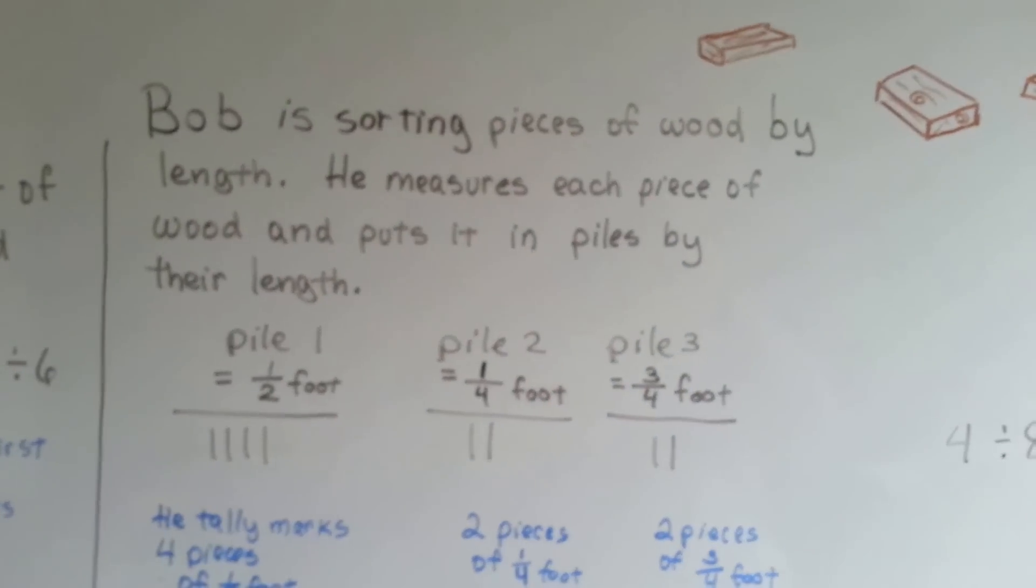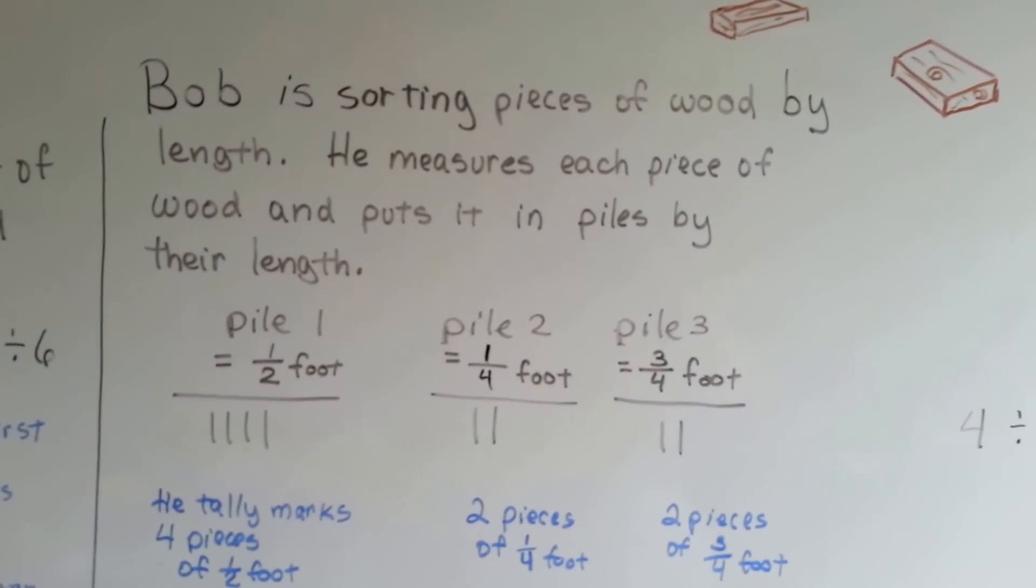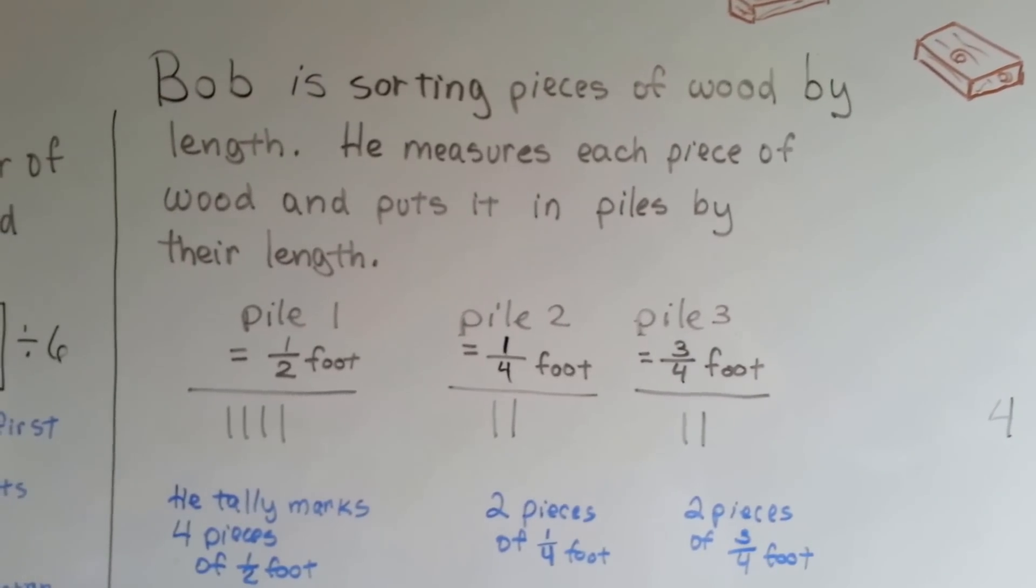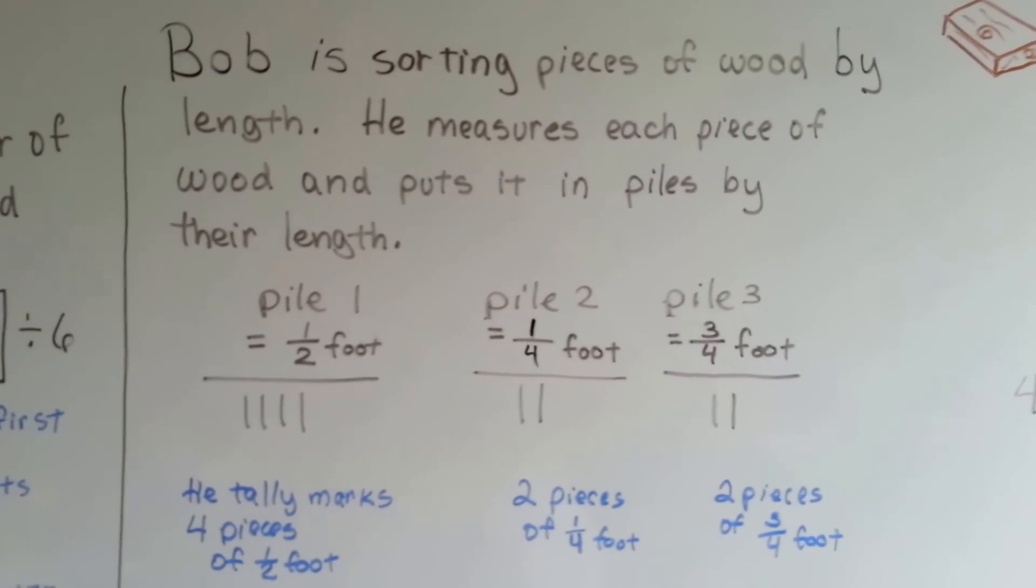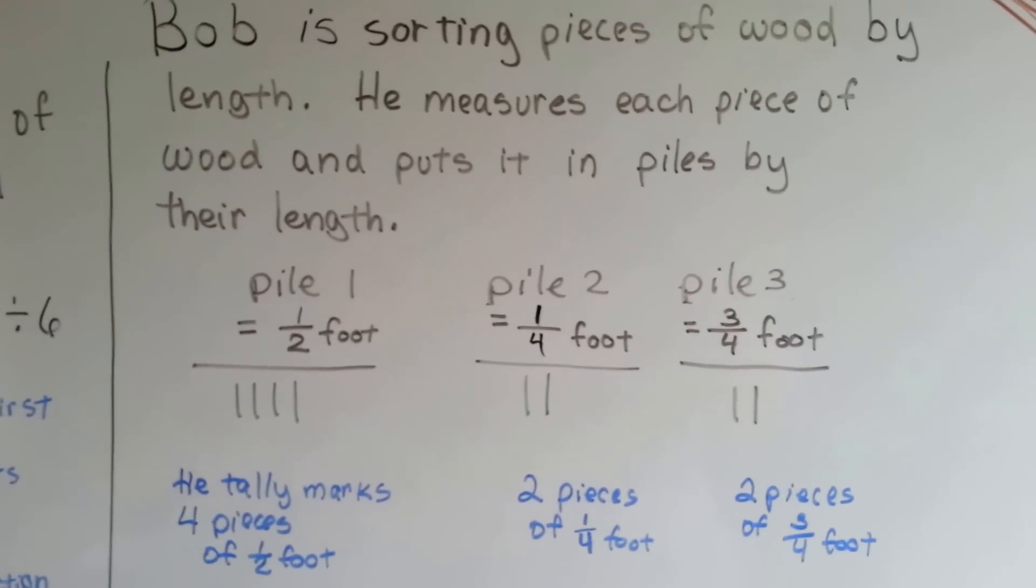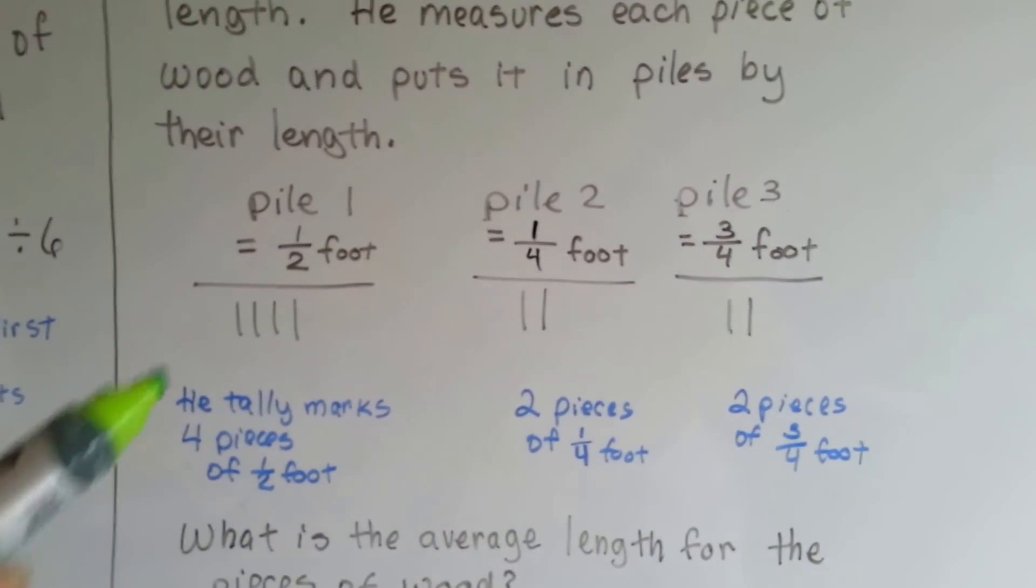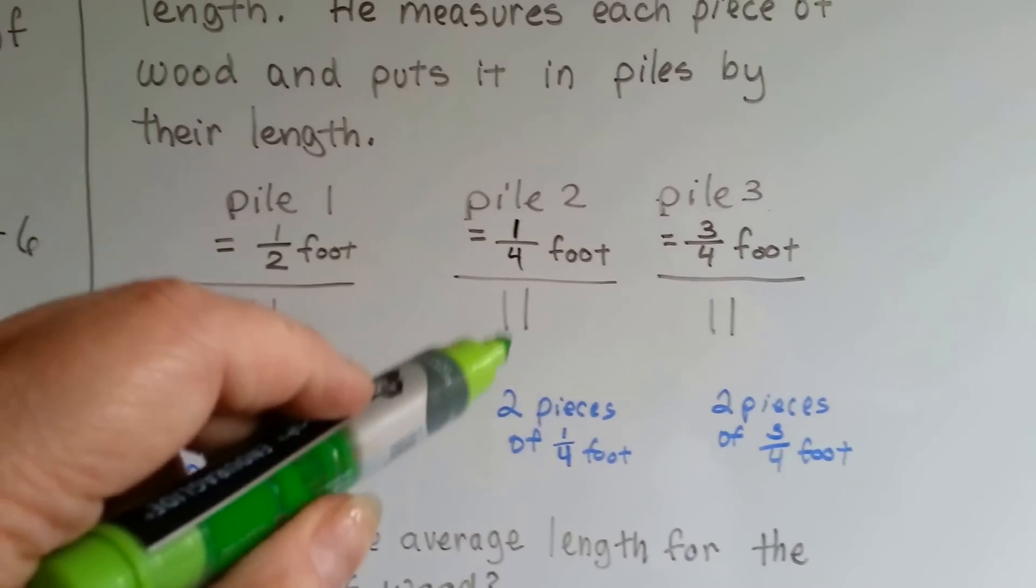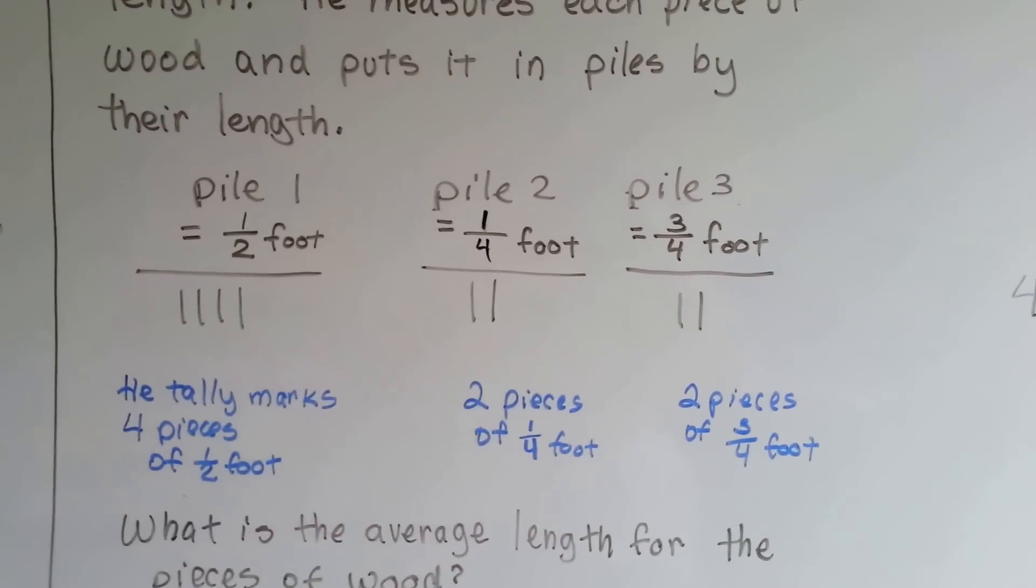Bob is sorting pieces of wood by length. He measures each piece of wood and puts it in piles by their length. So, pile one has half-foot lengths, pile two has one-fourth foot lengths, and pile three has three-fourth foot lengths. So, he tally marks them that he's got four at a half foot, two at one-fourth foot, and two at three-fourths feet.